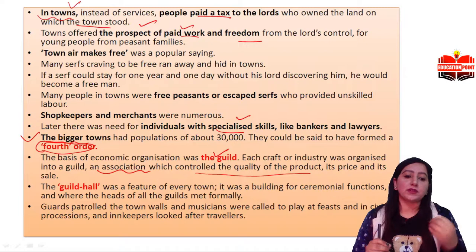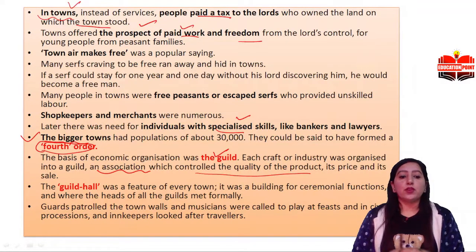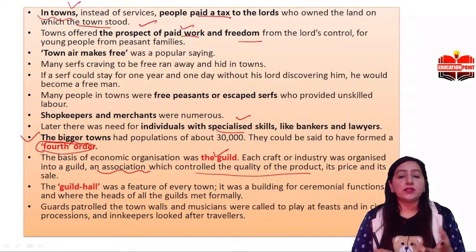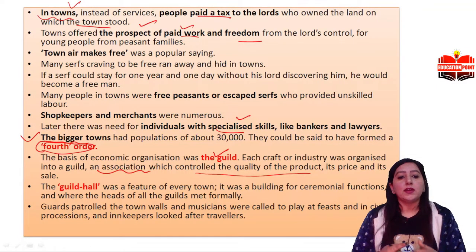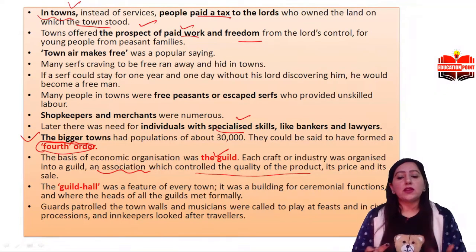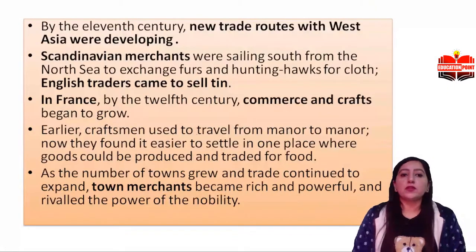The guild heads had discussions. Guards were placed and were close to the city walls. Musicians were called to play at the feast — when the meals were there, the musicians were also there. There were civic processions, keepers looking after travelers, and even travelers had to call guards. These were the features of big towns and cities.